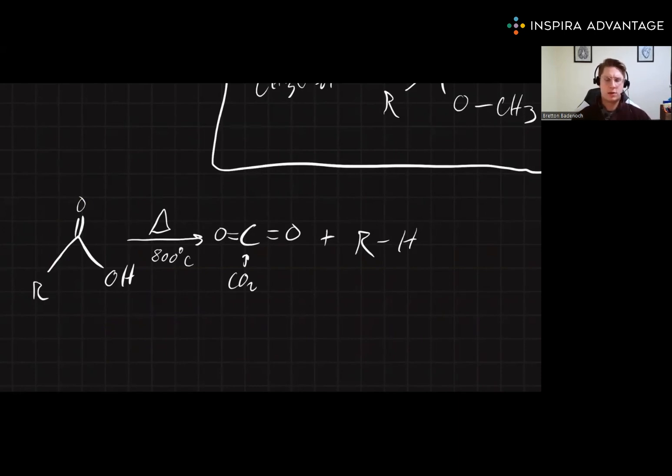The final thing we want to talk about concerning carboxylic acids are the acidity of the hydrogens. And when we have a plain carboxylic acid, we see that, you know, this H is going to be very acidic. However, when we have two carboxylic acids together, something we call a dicarboxylic acid.